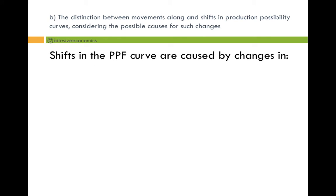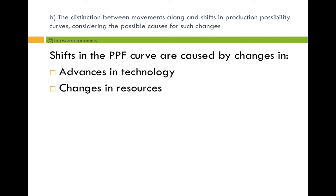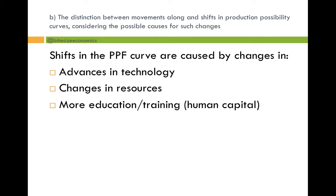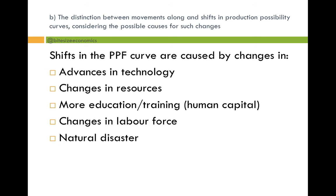Now the distinction between movements along and shifts in a production possibility curve, and the possible causes for such changes. Shifts in the PPF curve are caused by: advances in technology, so more goods can be produced ceteris paribus; changes in resources — more or better quality resources means more can be produced, shifting the PPF curve outwards; more education and training, an investment in human capital, giving more possibilities for production; a change in the labour force — more labour shifts it to the right. A natural disaster, however, can cause a contraction in the PPF curve.